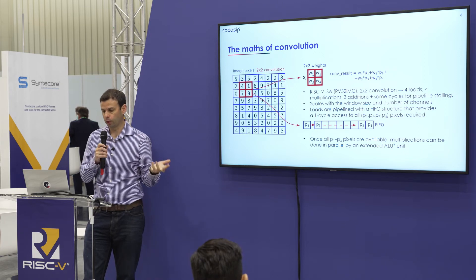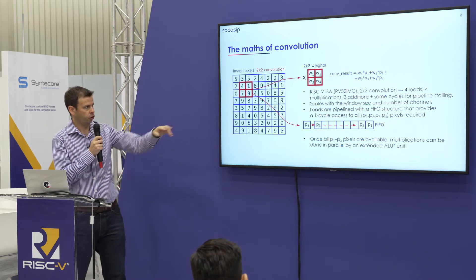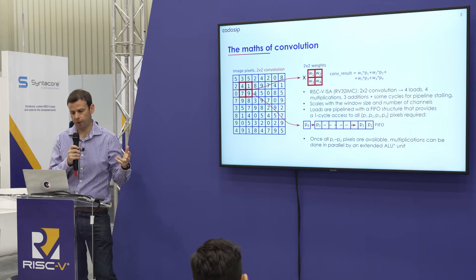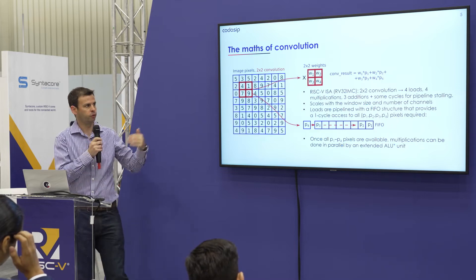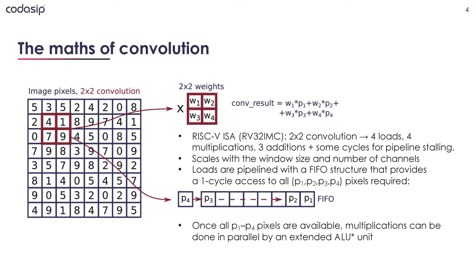One of the first things we can look at is pipelining the loads using a FIFO structure. By having a custom data storage element outside of the main register file, we can make all of those pixels available in a single cycle. We can then extend the ALU to have a large parallel multiplier that will make the maths much, much faster.